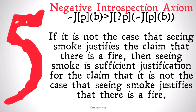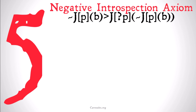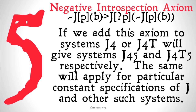You'll note that this axiom is going to be a little bit stronger than axiom 4, and some people may have problems with it. But we're not going to get into those debates right now. We're just going to say that if we add this to systems J4 or J4T, it'll give us J4.5 and J4T.5, respectively. The same will apply for particular constant specifications of J or other such systems like J0.